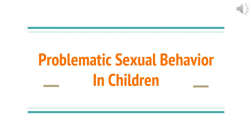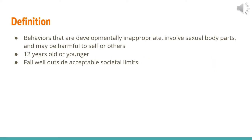This video is a brief overview of the definition and treatment of problematic sexual behavior in children and adolescents. Problematic sexual behaviors are behaviors that are developmentally inappropriate, involve sexual body parts, and may be harmful to the self or others. These behaviors must be performed by children and adolescents aged 12 years or younger and must fall outside of acceptable societal limits.